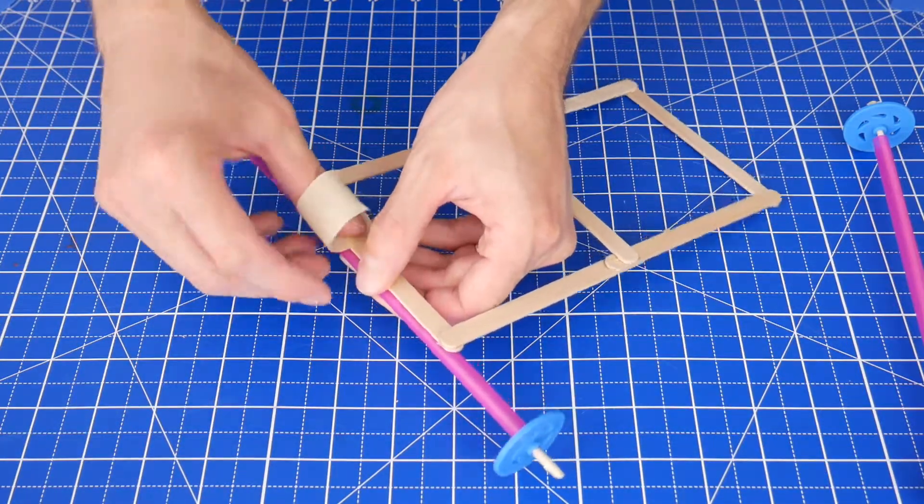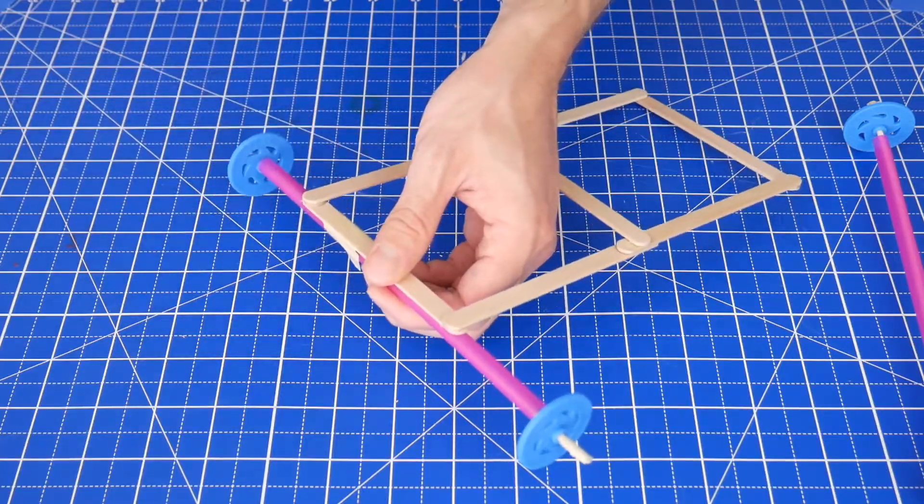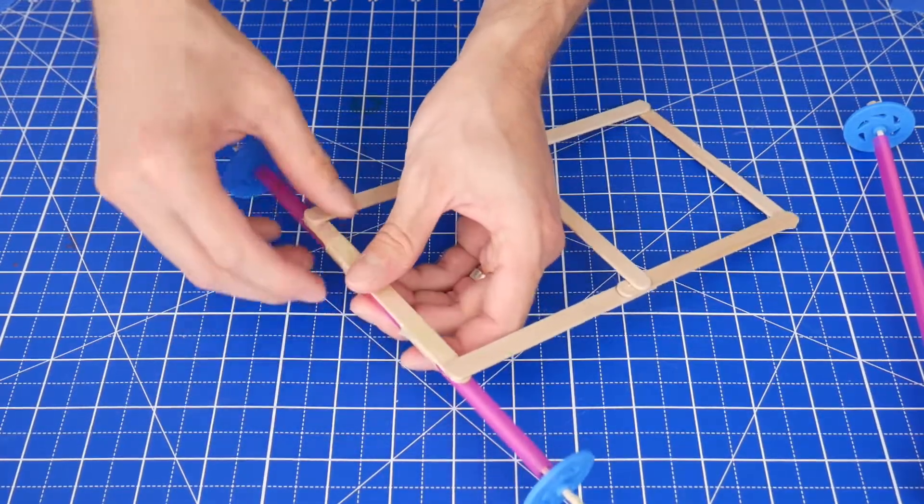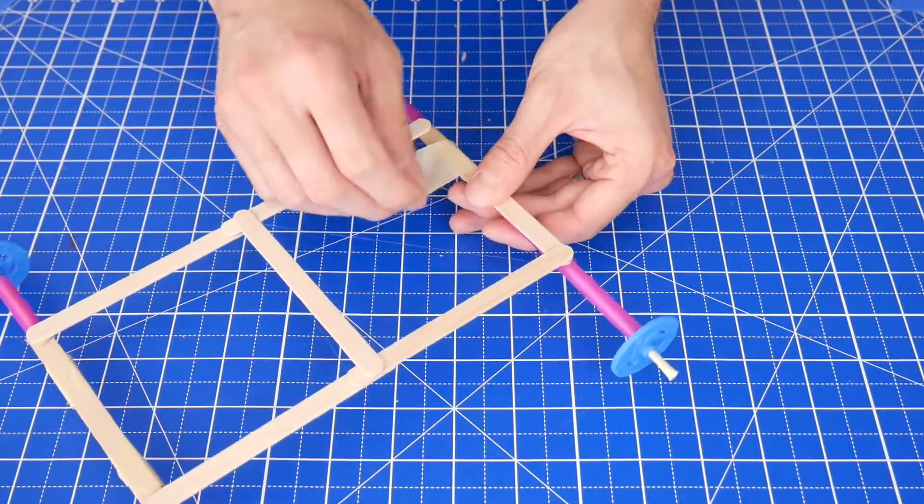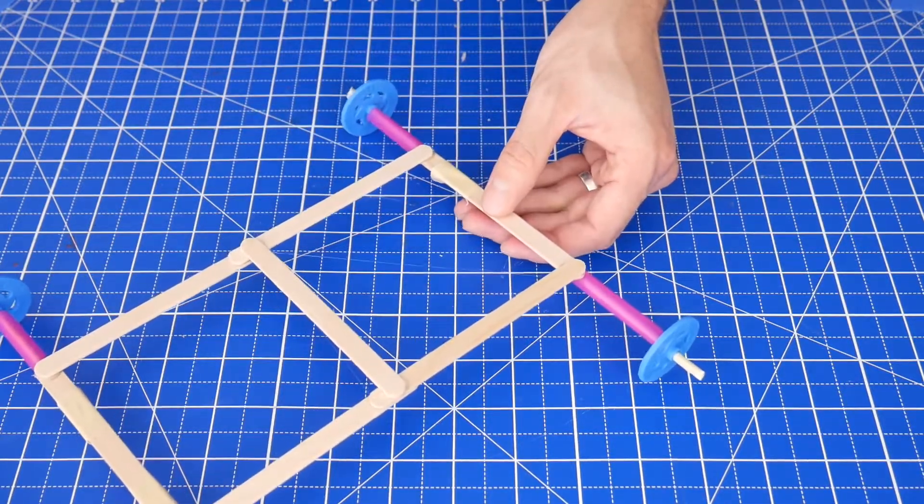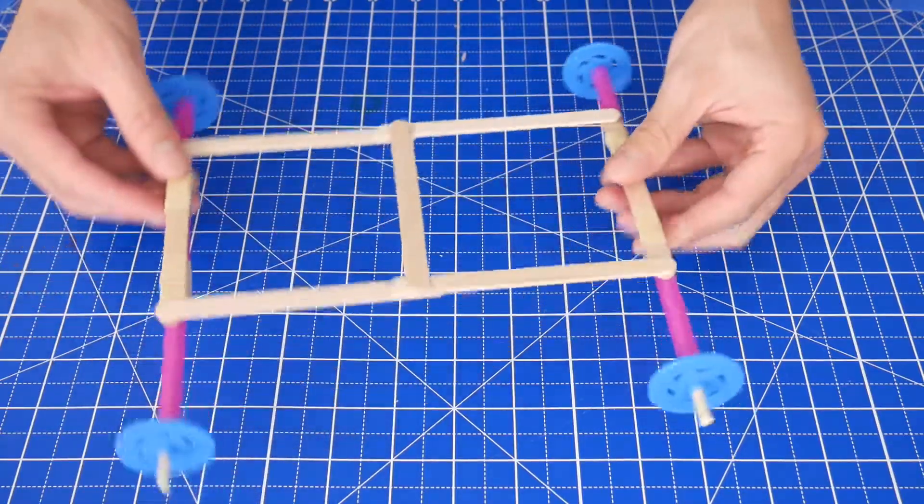Next, tape one set of wheels to the underside of the frame in at least two places. If the wheels are only taped in one place it'll be less stable. Repeat on the other side, and as you're attaching both sets of wheels, do your best to make sure that the wheels are parallel with each other like this.